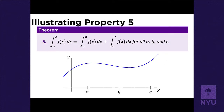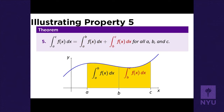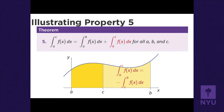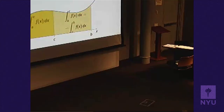We saw two illustrations of that property. If B is between A and C, the integral from A to B is the area of one piece, and from B to C is another. Put together they give the integral from A to C. Even if B is greater than C, the identity still holds because the integral from B to C is negative — it's the opposite of integrating from C to B.